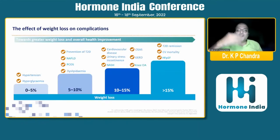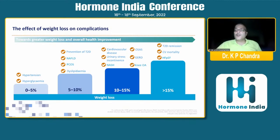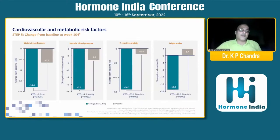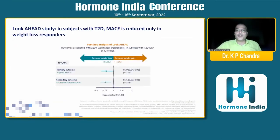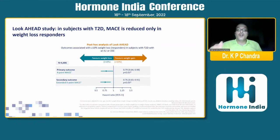With 0 to 5% body weight loss, there is significant improvement in hypertension and hyperglycemia. With 5 to 10% body weight loss, there is improvement in NAFLD and dyslipidemia. With 10 to 15% loss, cardiovascular disease, obstructive sleep apnea, and osteoarthritis improve. For type 2 diabetes remission, CV mortality, and heart failure with preserved ejection fraction, body weight must decrease by more than 15%. Results from the STEP 3 trial show beneficial effects of semaglutide on waist circumference, systolic blood pressure, C-reactive protein, and triglyceride levels. The Look-AHEAD trial also suggested benefits in 4-point major adverse cardiovascular events and secondary outcomes with weight loss of more than 10%.